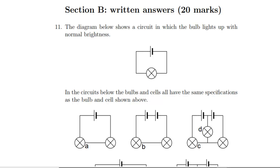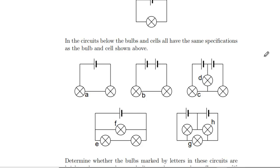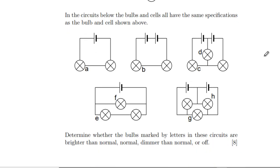This video continues looking at the 2006 Oxford PAT. Section A was covered in the previous video; this is Section B, the physics part, so we're on to the longer questions now. Question 11: the diagram below shows a circuit in which the bulb lights up with normal brightness. In the circuits below, the bulb and all cells have the same specifications. Determine whether the bulbs marked by letters are brighter than normal, normal, dimmer than normal, or off.